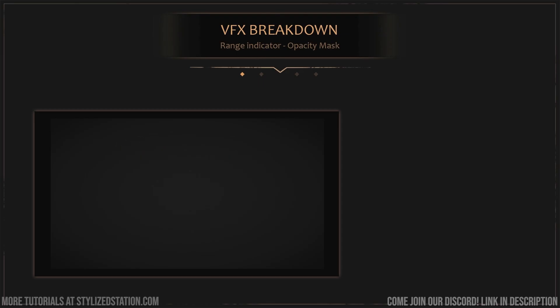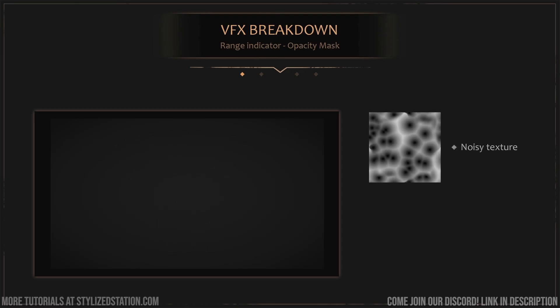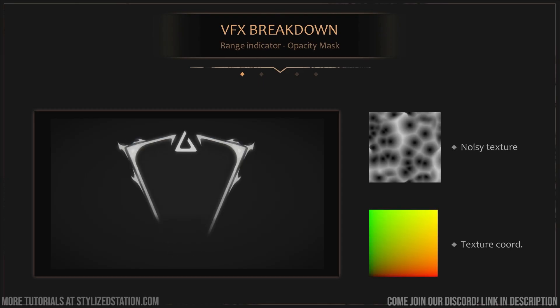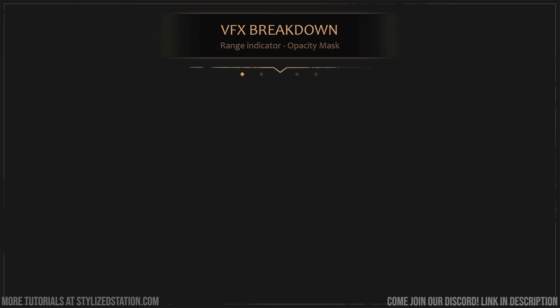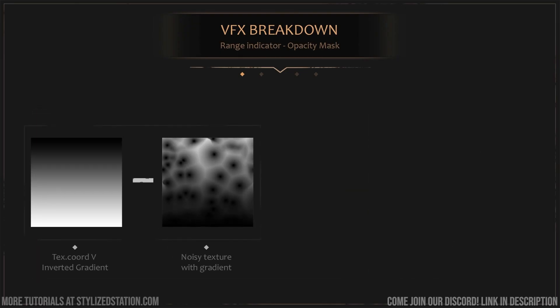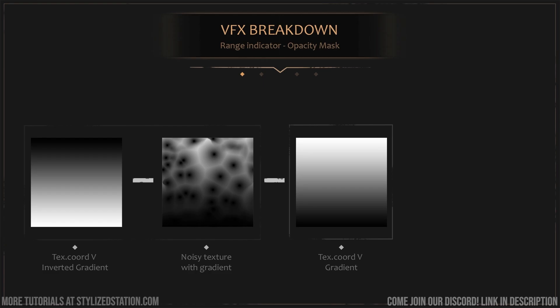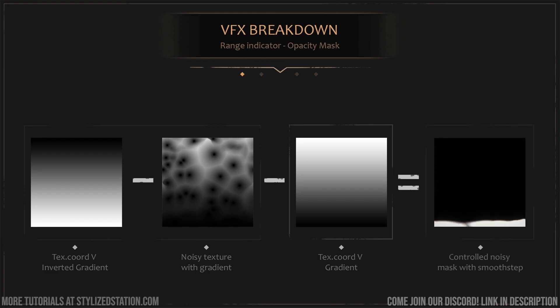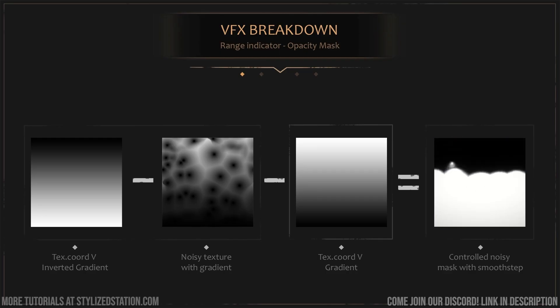For the range indicator opacity mask, we'll use a noise texture and the texture coordinates of our plane. We'll take our texture coordinate V output and invert it, giving us a nice inverted gradient. Then we'll subtract it from our noisy texture, on which we've already applied a linear gradient. We will then subtract the result with our texture coordinate V gradient, and with the smooth step function and a float value, we can now control our mask from top to bottom.